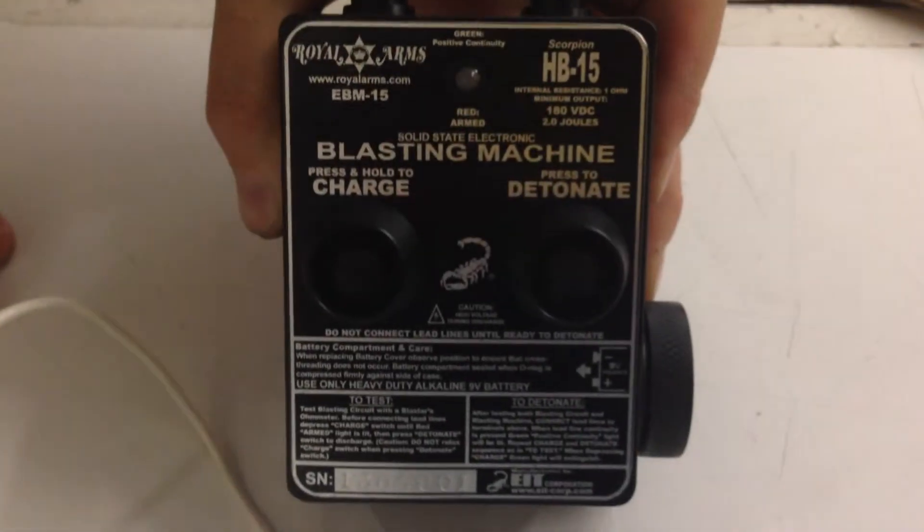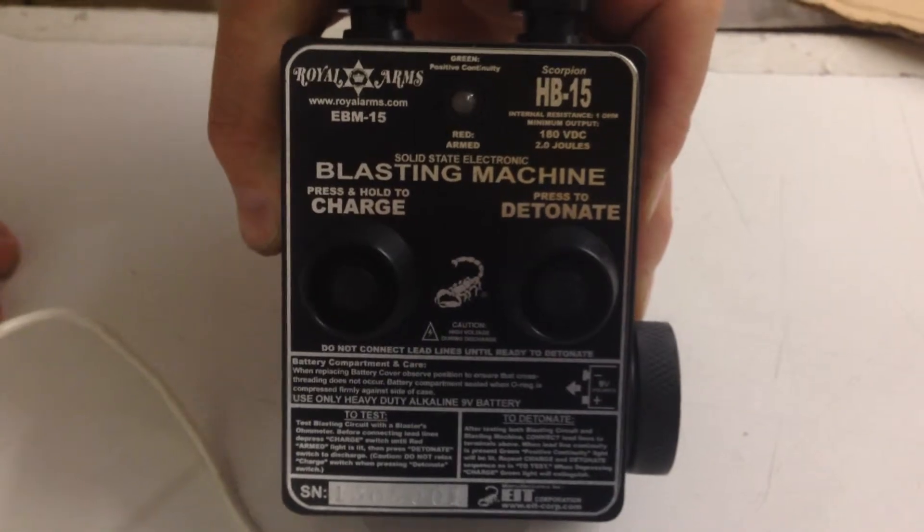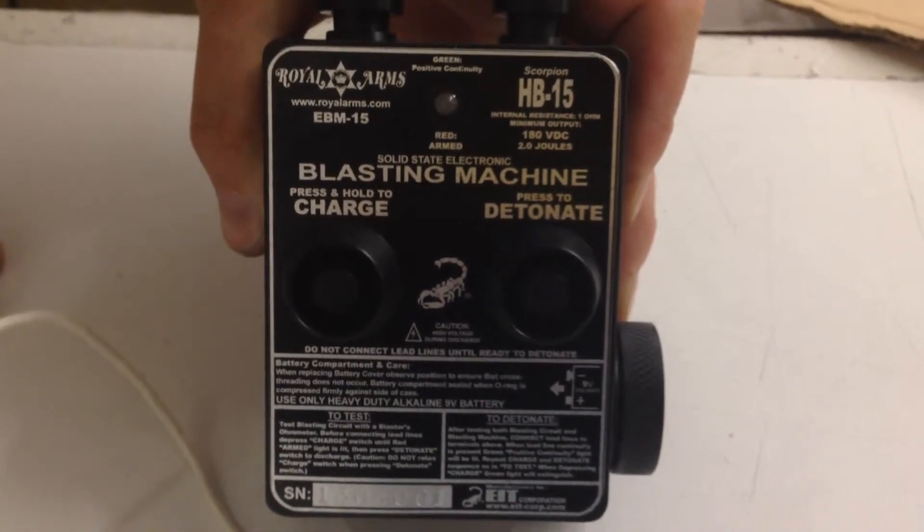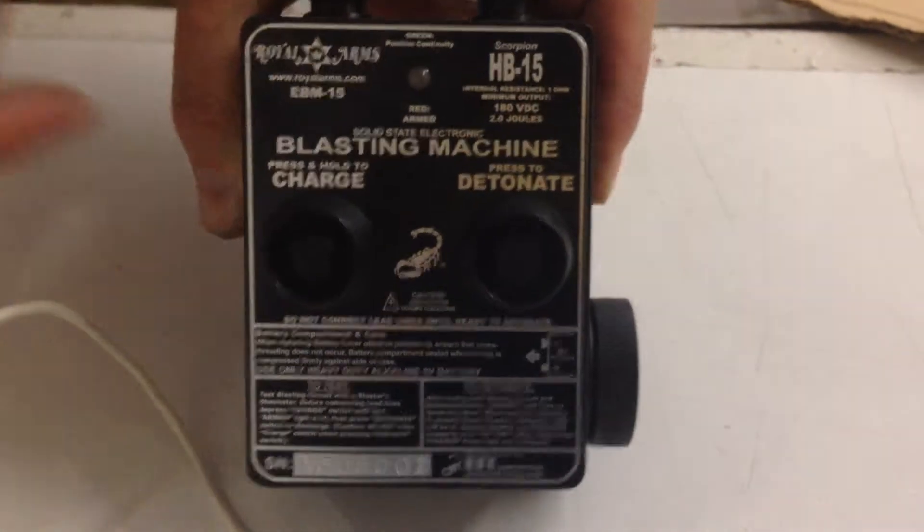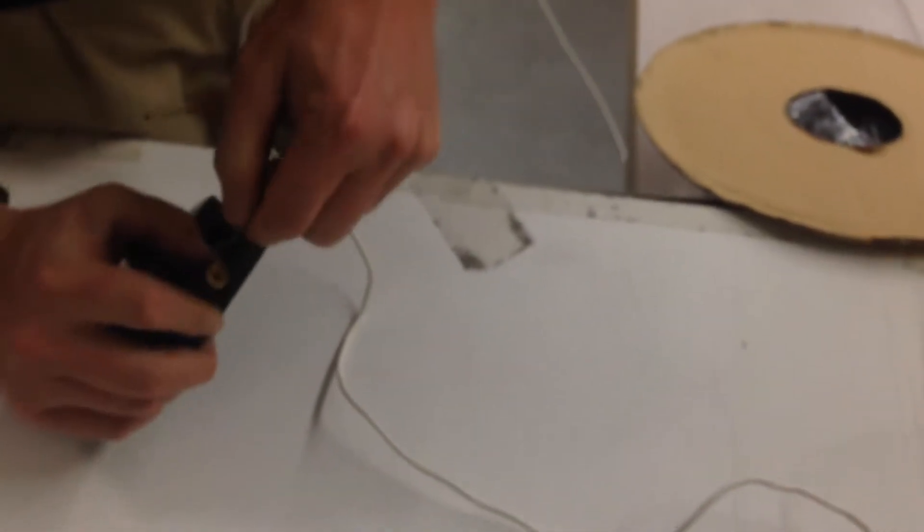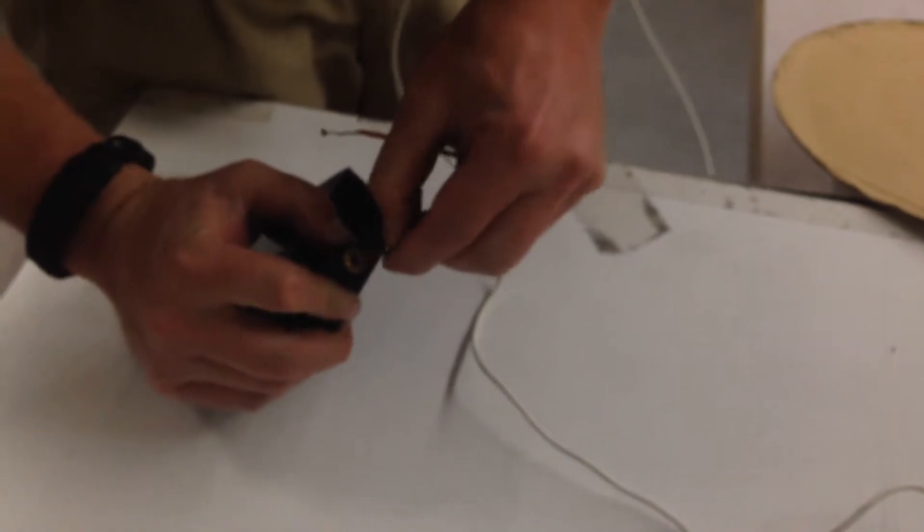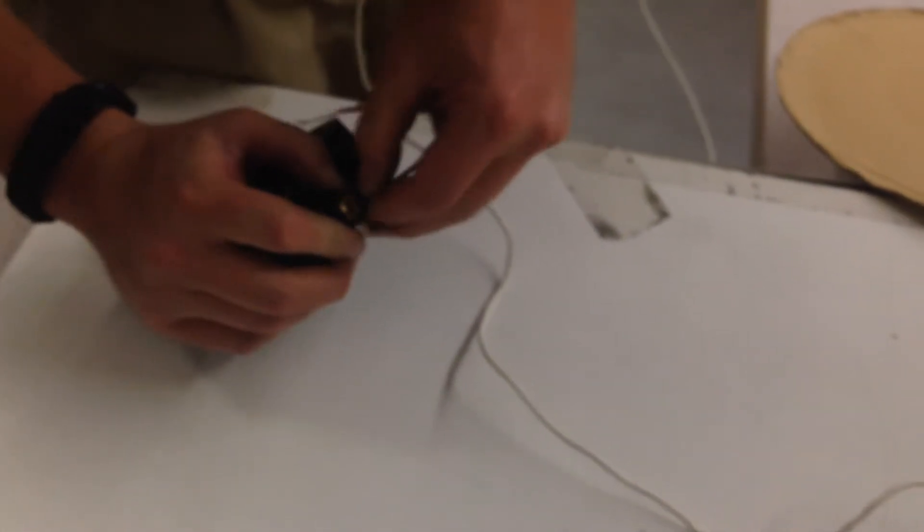Put my ears on. I'm going to go ahead and prime into our blasting machine. This is a EBM-15. It is an electric blasting machine with continuity and built-in continuity light and firing light. So once I hook into these lines here, we will get a red light telling us that we have a good circuit. So you can see I'm going to prime into the post here.